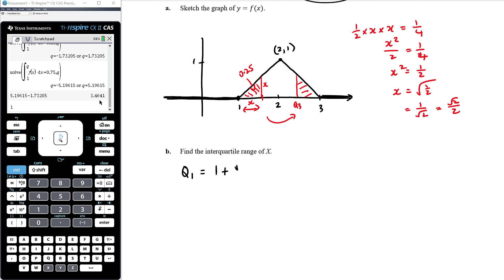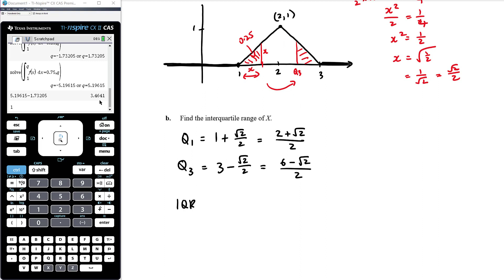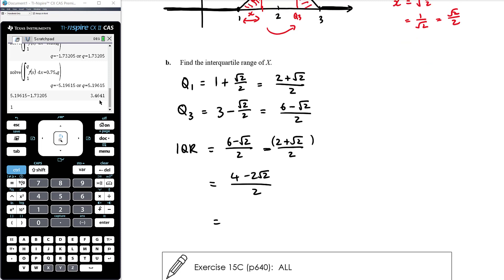And so therefore we can work out that q1 is 1 plus that value and q3 is 3 minus that value. So let's do it as root 2 on 2, which means that's 2 plus root 2 all over 2. And q3 is going to be 3 minus that. 2 on 2. 3 is the same as 6 on 2. So that is 6 minus root 2 all over 2. And so therefore the interquartile range is q3 minus q1. OK, careful about the fact that you're subtracting. You're subtracting all of that. So it's 6 minus 2, which is 4. It's minus root 2 minus root 2. So minus 2 root 2 over 2. And we've got a nice common factor of 2 there. So 2 minus root 2 over 1. So it's just 2 minus root 2 for the interquartile range.